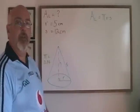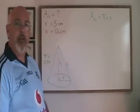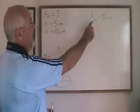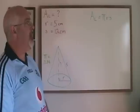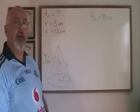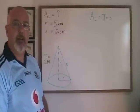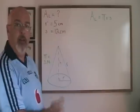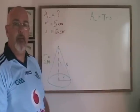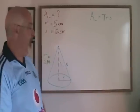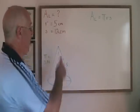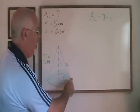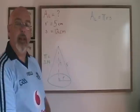The formula for the lateral area of a cone looks like this. Lateral area is equal to pi times r times s. R is the radius of the circle found at one end of the cone, and s is the slant height — this diagonal length here.